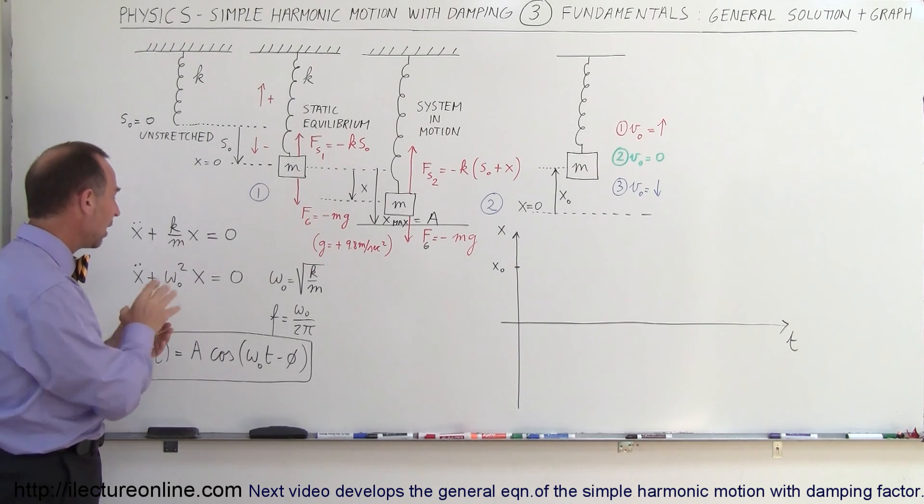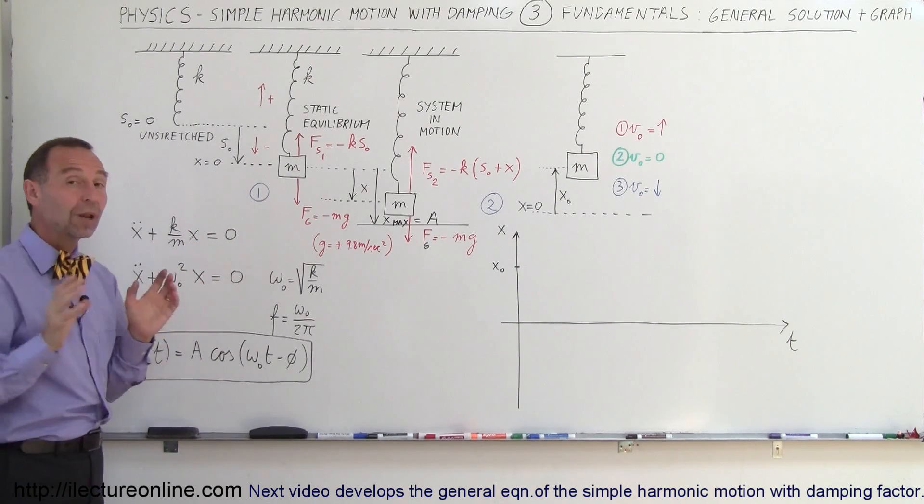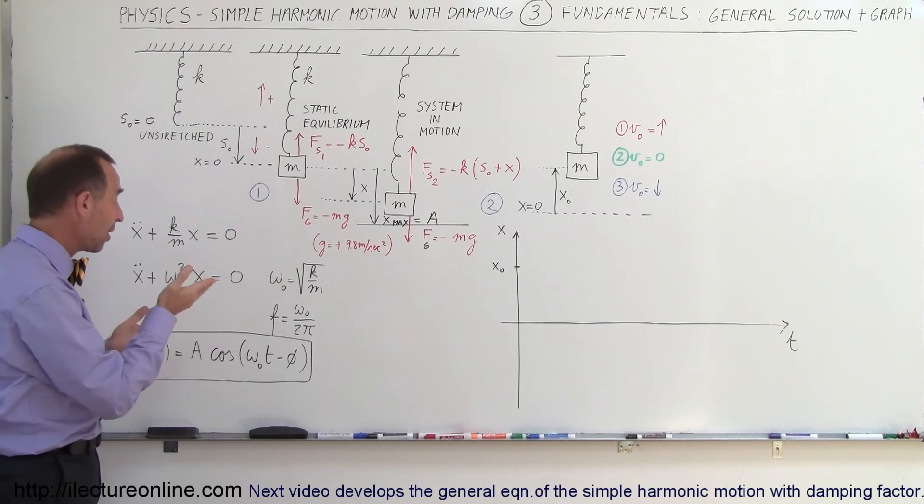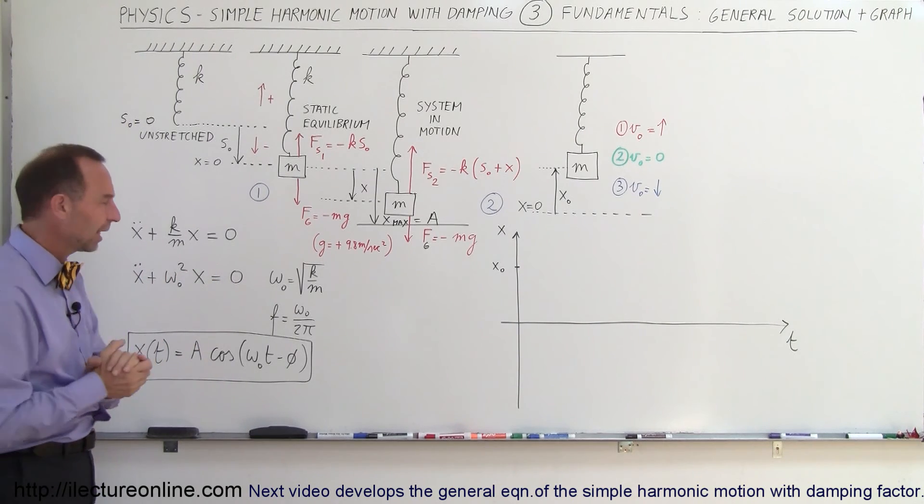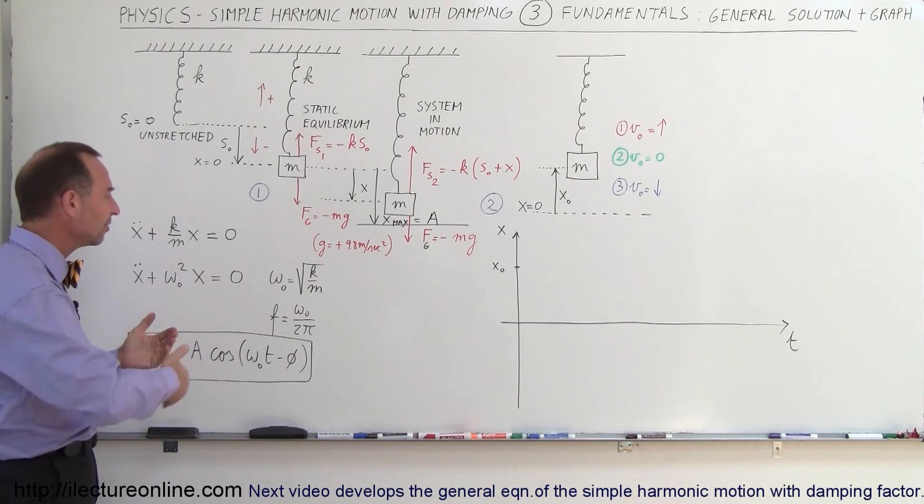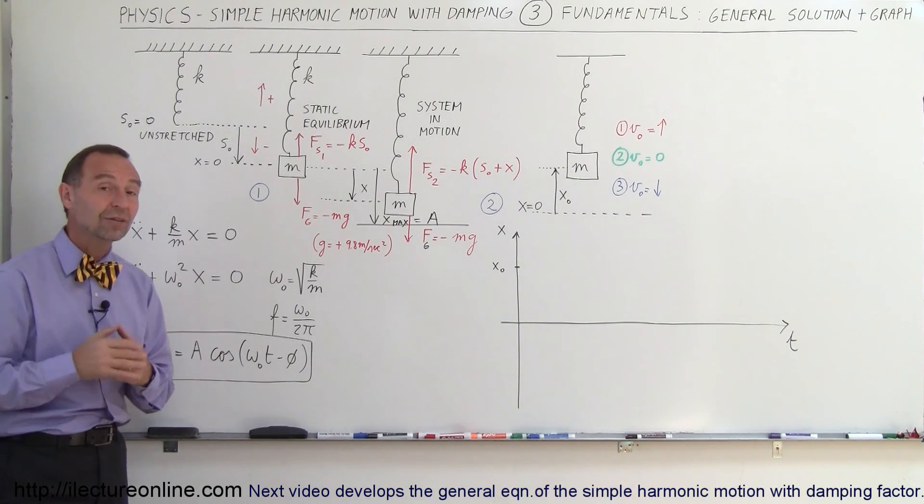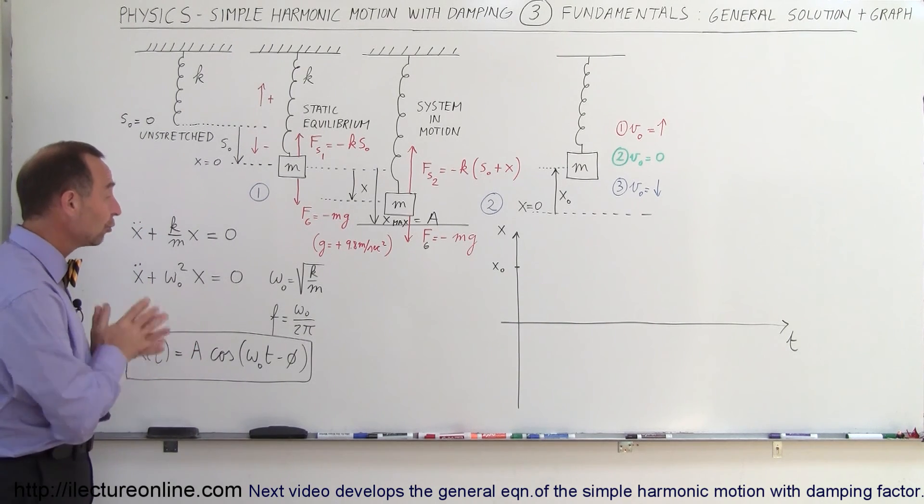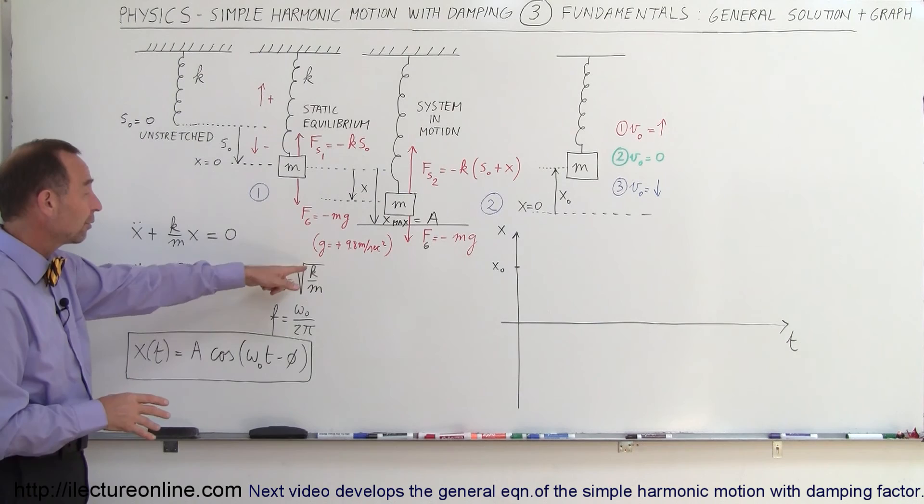notice I used omega sub nought squared because we're going to use omega sub nought as the frequency, the radial frequency of the system without damping, and then omega prime will be the one with damping. So omega sub nought simply means the angular frequency of the oscillation when there's no damping involved, and it's equal to the square root of k over m.